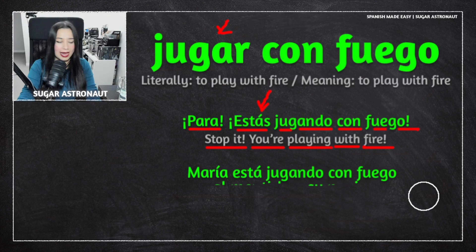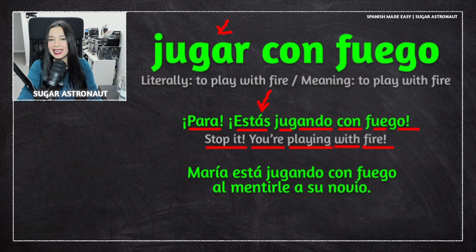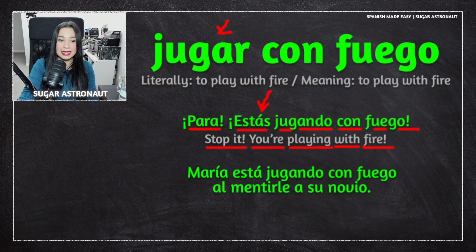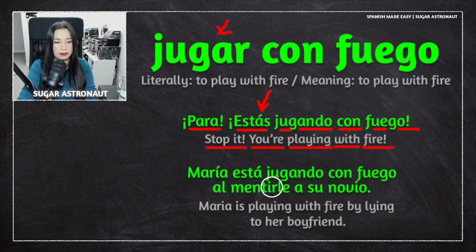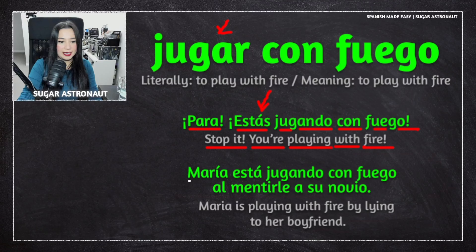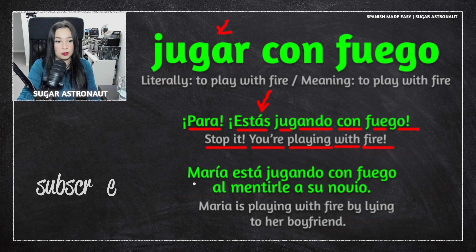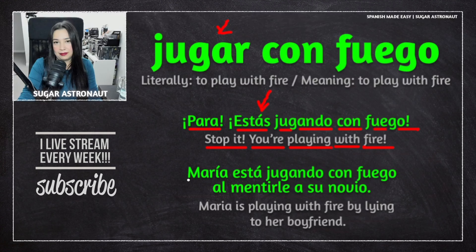Now let's look at another example: María está jugando con fuego al mentirle a su novio. This means Maria is playing with fire by lying to her boyfriend. So Maria is doing something she should not be doing, because lying — especially to your partner — is not right.